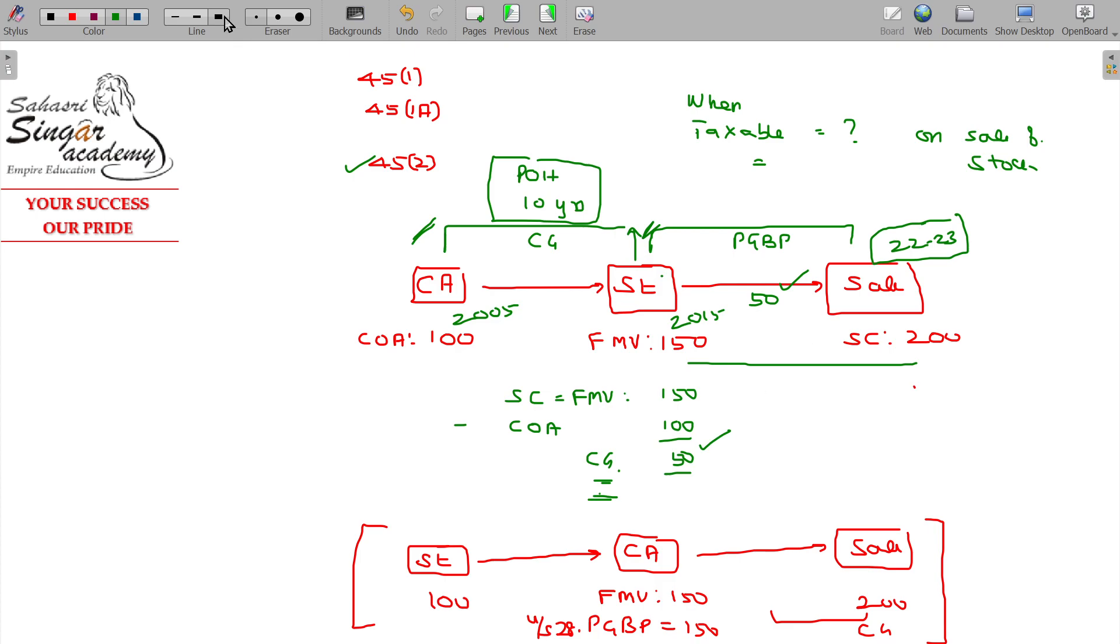Suppose in the year in which the stock is sold only 50% is sold, only half is sold. Then half of that will be taxable in the year of sale. Capital gains half, and that will be taxable. PGBP half, that much will be taxable. Is that clear?